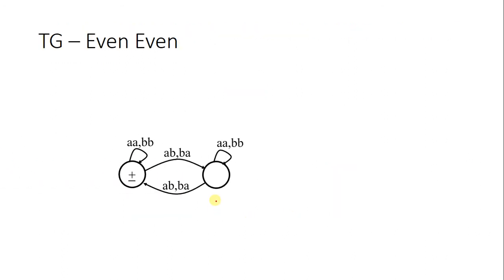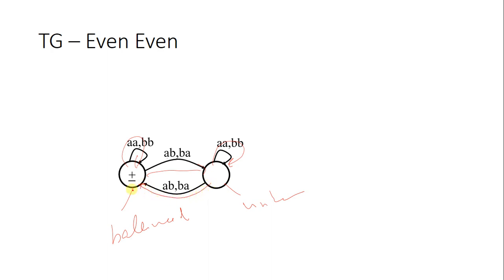Next is the even-even language. In this language there is a balanced state where both A and B counts are even, and an unbalanced state. If you get double A or double B you stay in the balanced state. If you get a single A and single B, then A's become odd and B's become odd, so you move to the unbalanced state. From the unbalanced state, getting even A's and even B's returns you to the balanced state.